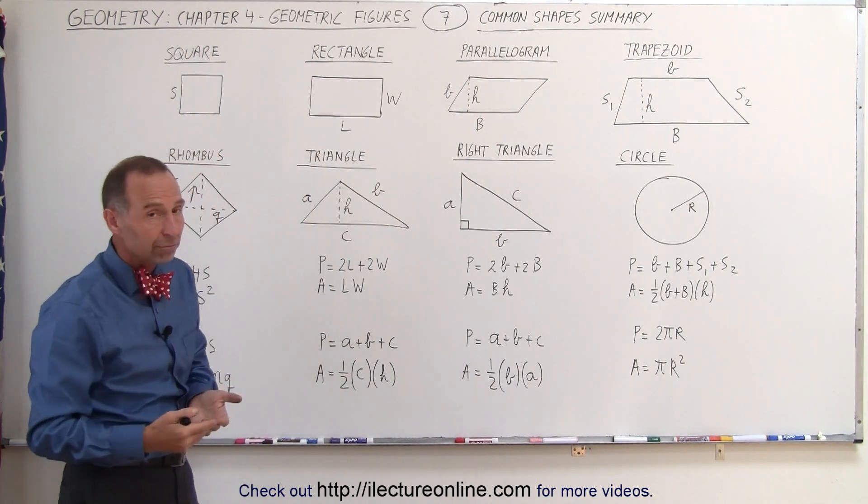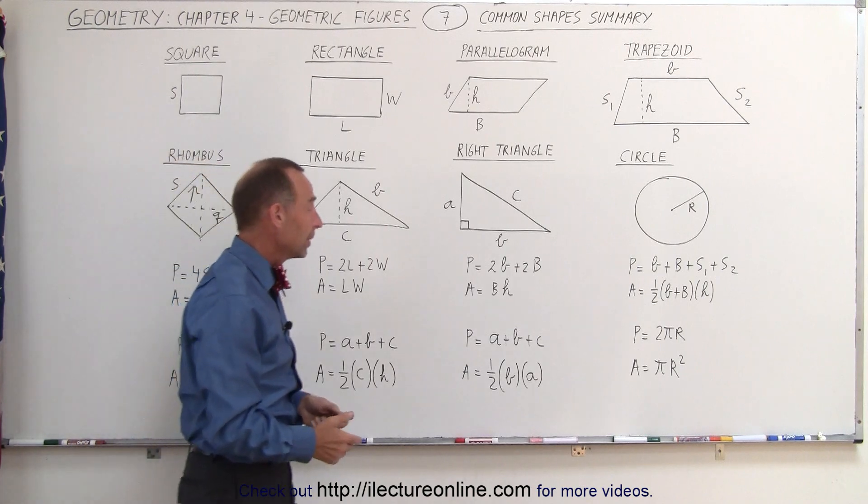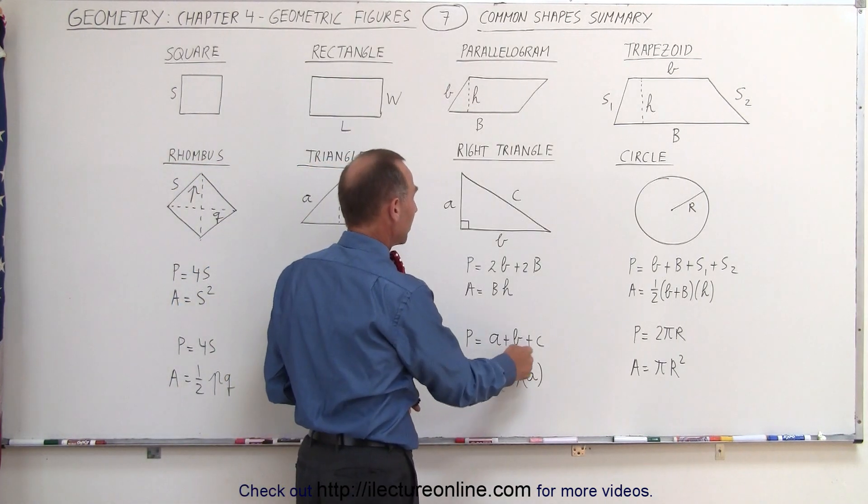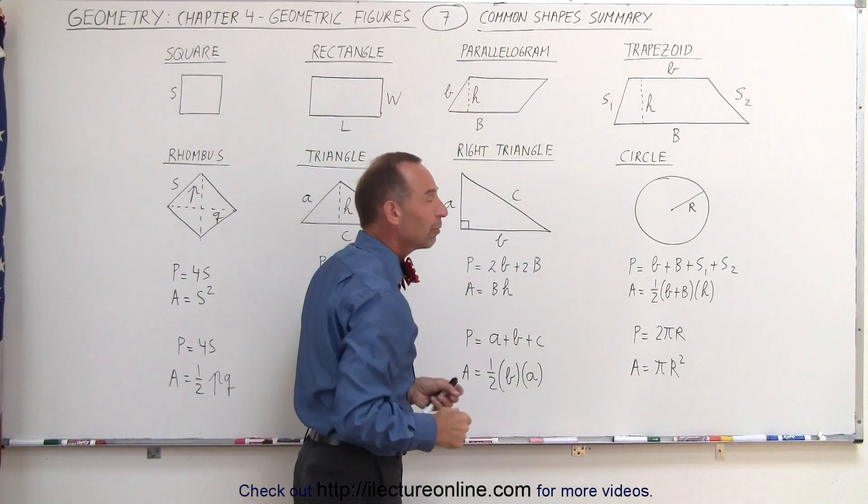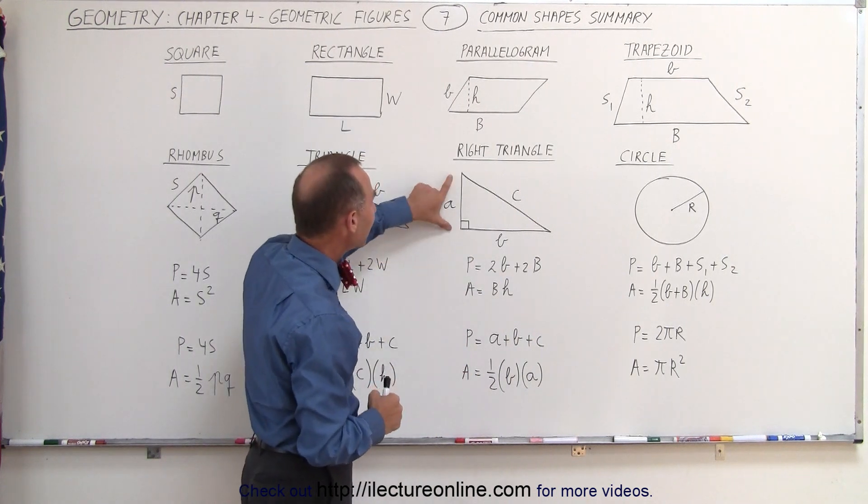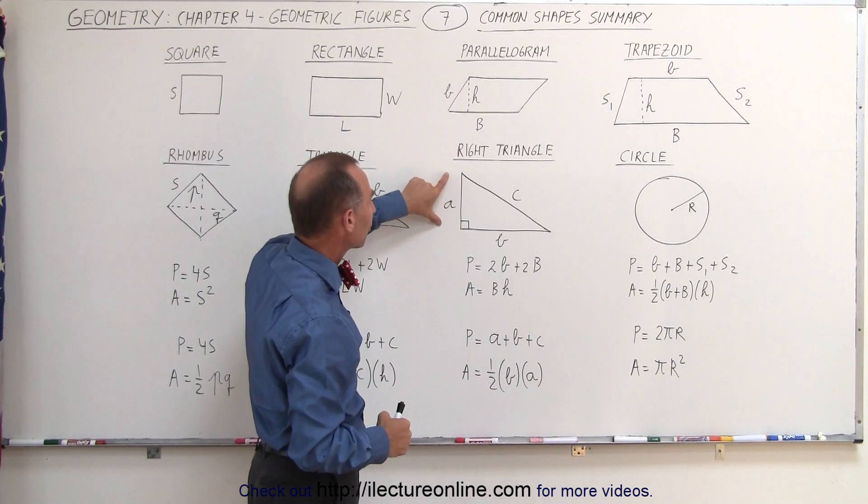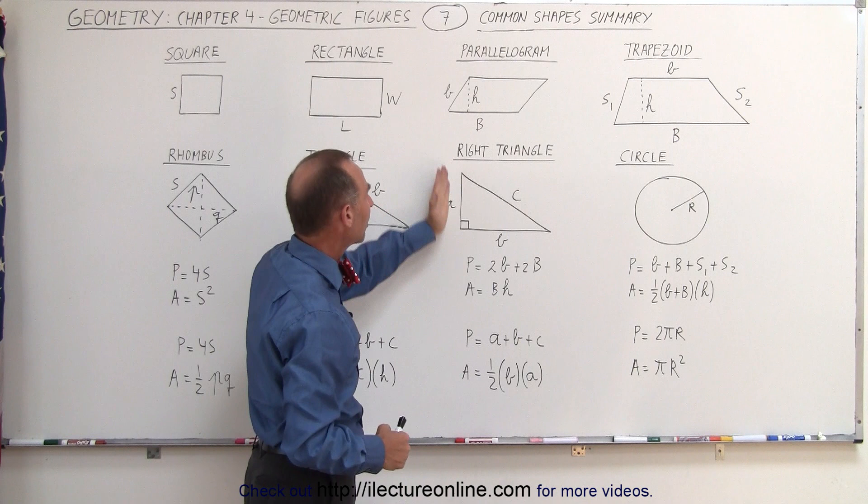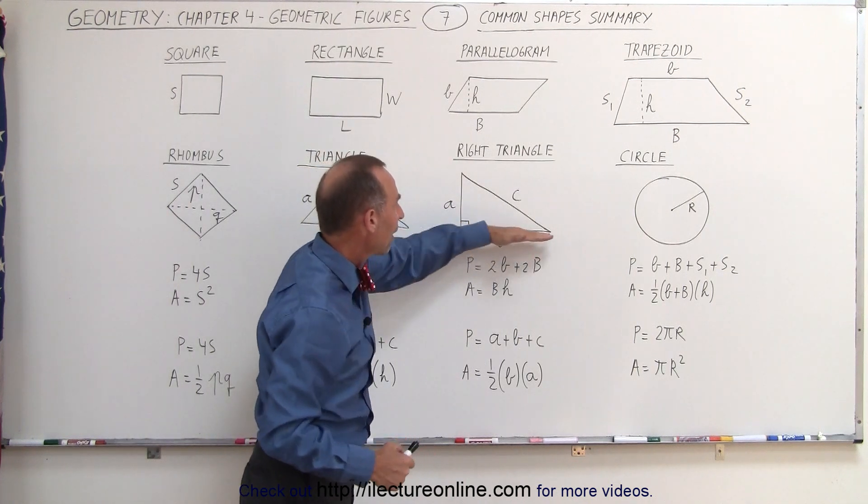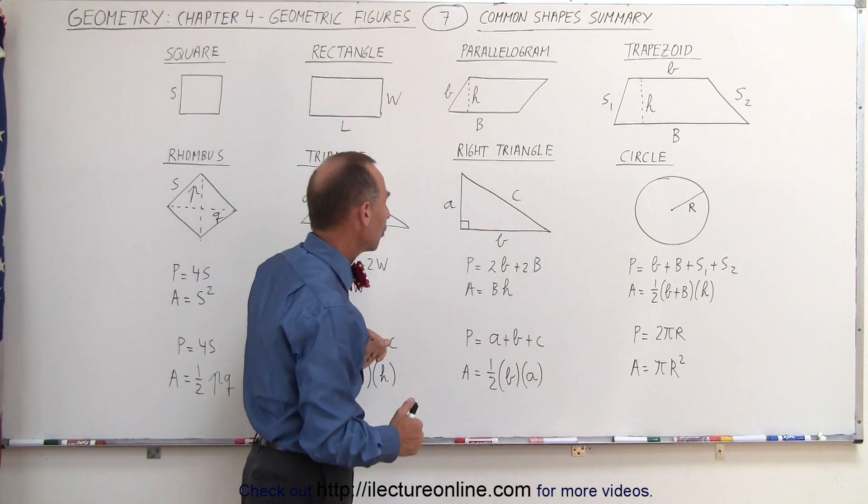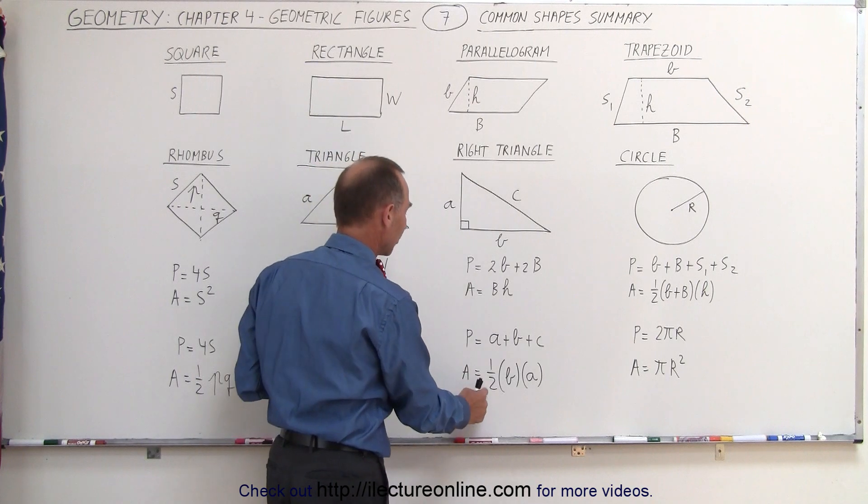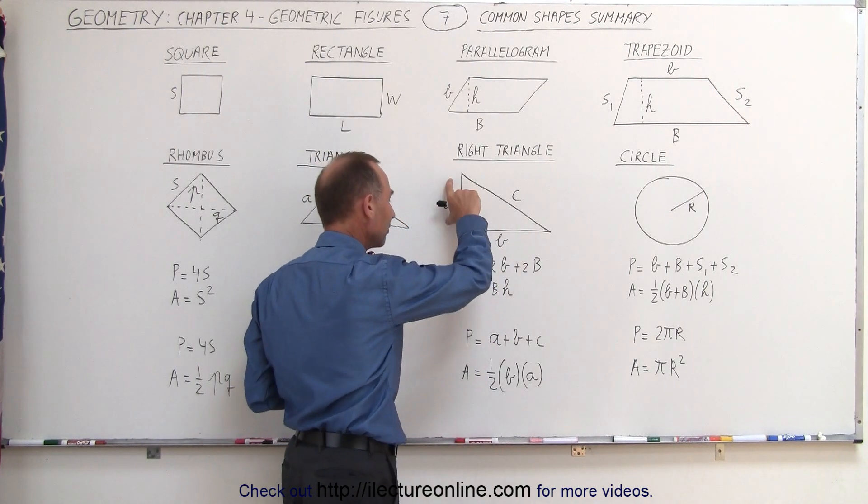For the right triangle, the equations are just the same. The perimeter is a plus b plus c, simply the sum of the sides. But for the area, notice that the height here is equal to the short side a, which is perpendicular to the bottom side here called b. So one-half the base times the height becomes one-half b times a.